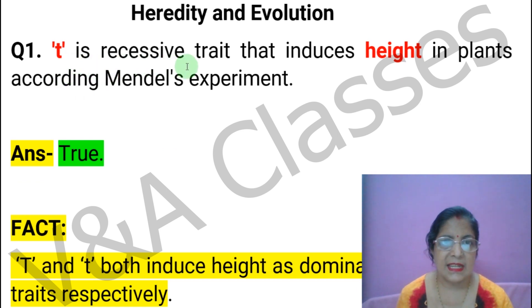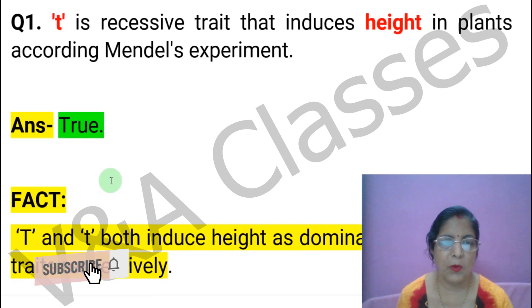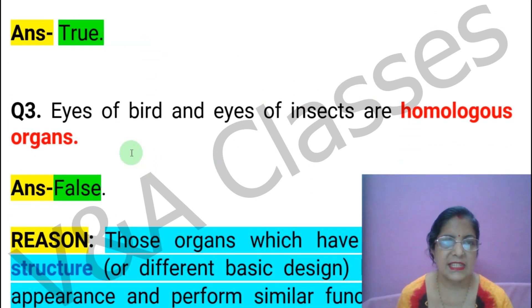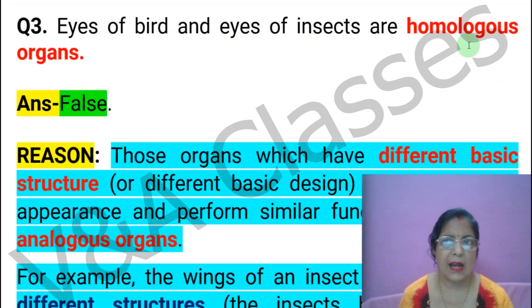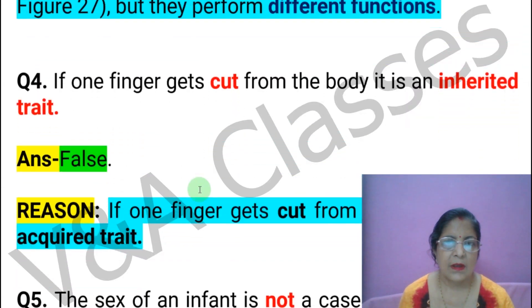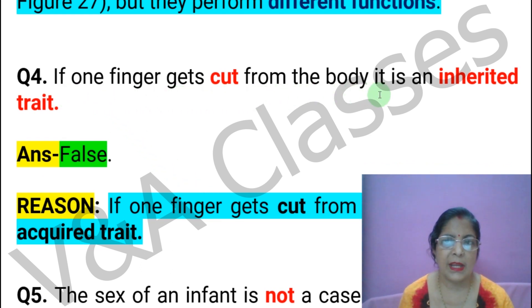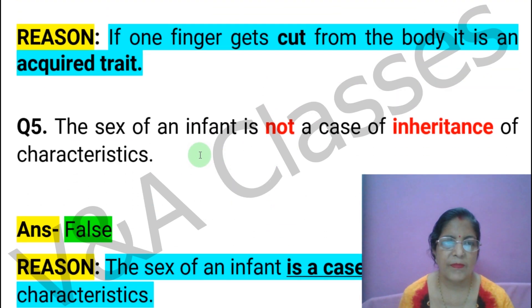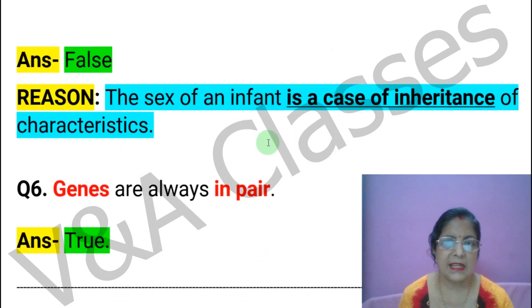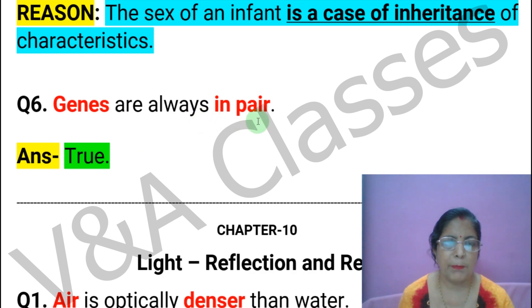Now Chapter 9: Heredity and Evolution. First statement: Small 't' is the recessive trait that includes height in plants according to Mendel's experiment. This statement is TRUE. Next statement: Males have XY pair of sex chromosomes. This statement is TRUE. Next statement: Eyes of birds and eyes of insects are homologous organs. This statement is FALSE — these are analogous organs, not homologous. Next statement: If a finger gets cut from the body, it is an inherited trait. This statement is FALSE. Next statement: The sex of an infant is not a case of inheritance of characteristics. This statement is FALSE. Next statement: Genes are always in pairs. This statement is TRUE.